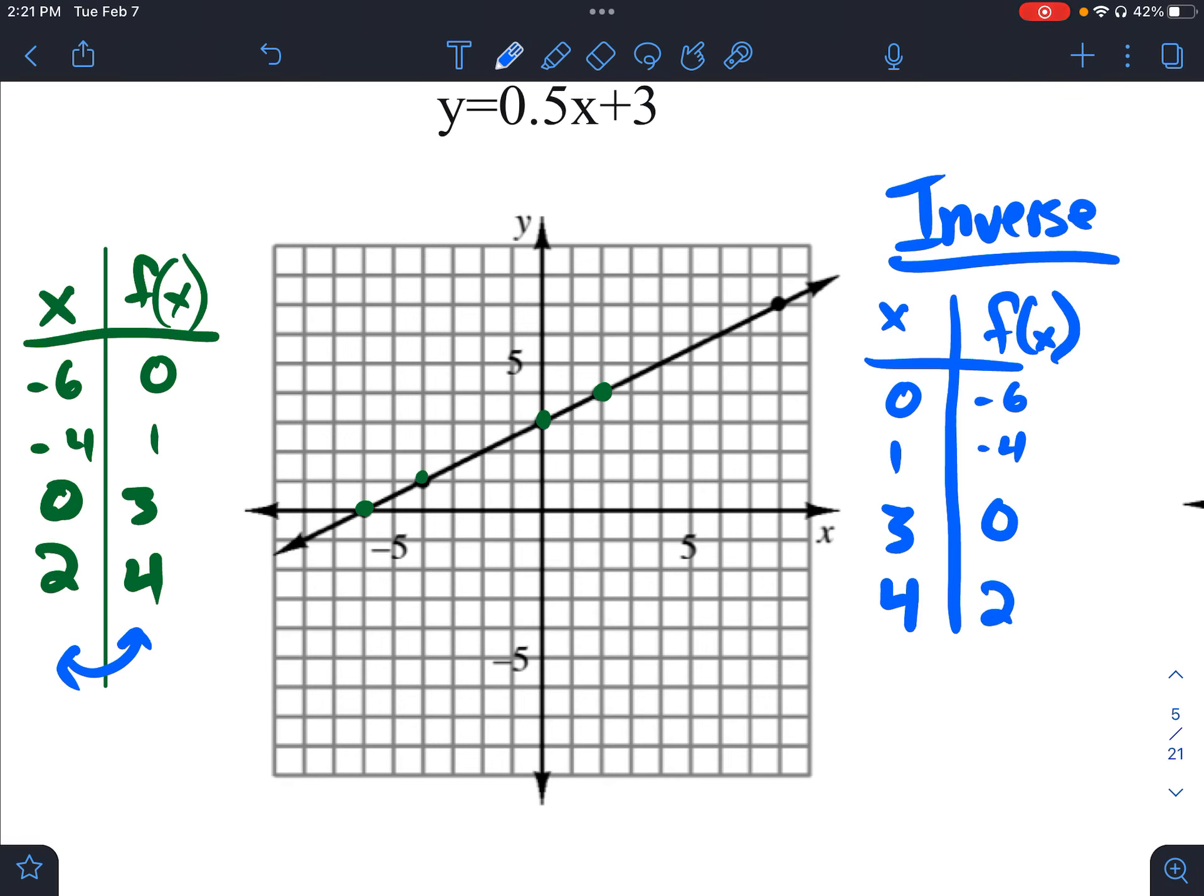So when we graph this, we have the point 0, negative 6. We have the point 1, negative 4. We have the point 3, 0, and we have the point 4, 2. And when I connect this, we should have a line that goes through each of those and looks about like this. So this is my f inverse of x.